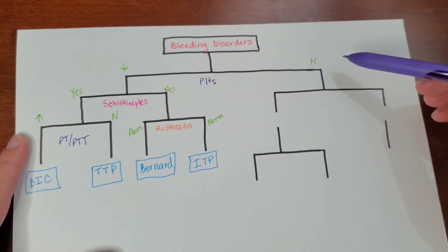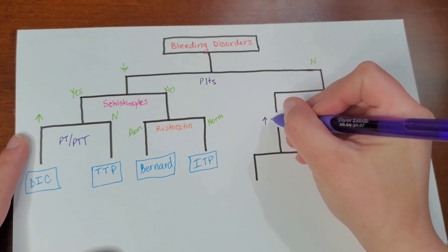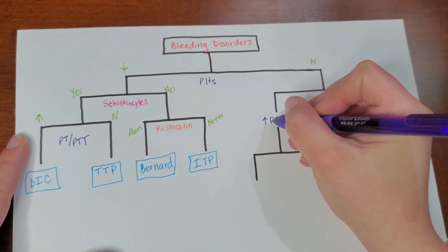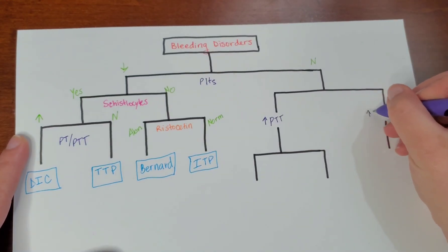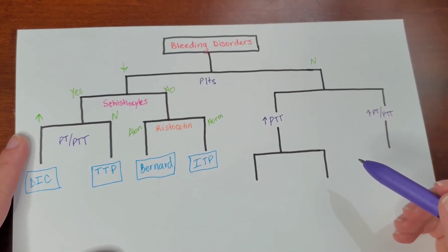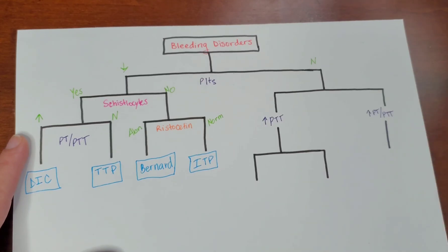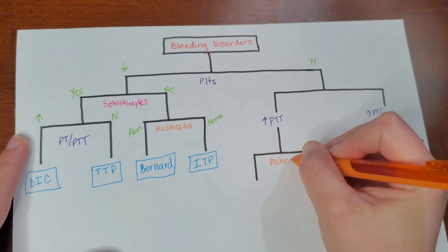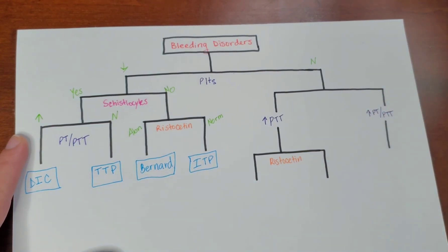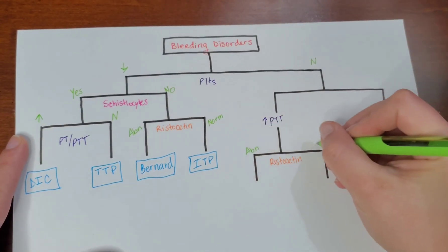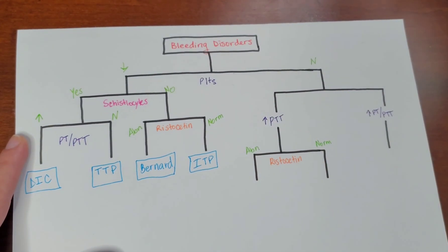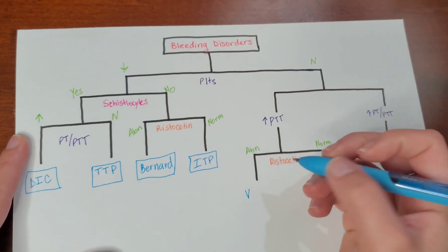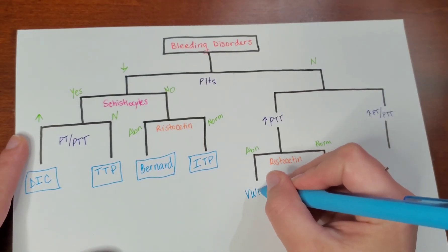If our platelets are normal, we're going to split this into an increased PTT only, or if there was increased PT as well as PTT. If you see an increase in PTT only, the next question you'll ask yourself is if the ristocetin test was normal or abnormal. If the ristocetin test was abnormal and we have normal platelets, this would be von Willebrand disease.